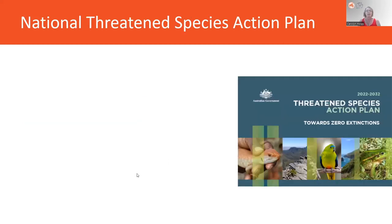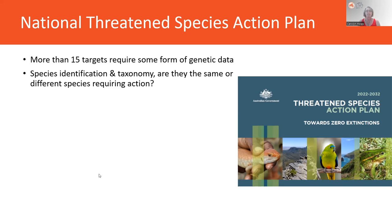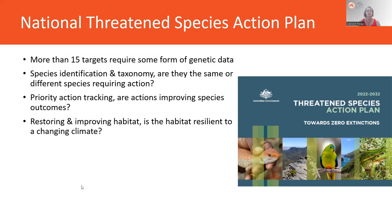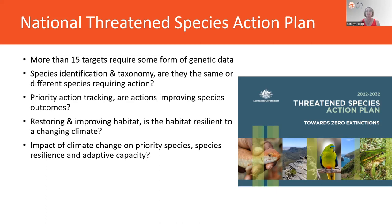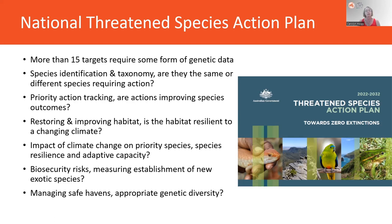Looking at the National Threatened Species Action Plan published in 2022, running to 2032, there are more than 15 targets requiring some form of genetic data. These include species identification and taxonomy, priority action tracking, restoring and improving habitat resilient to climate change, and understanding how listed species will maintain adaptive capacity into the future. Genetics can also assess biosecurity risks around exotic species, and manage safe havens by ensuring appropriate genetic diversity in founding populations for long-term viability.